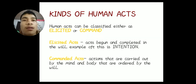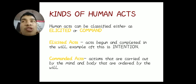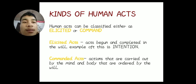There are two kinds of human acts: the elicited act and the commanded act. The elicited act is the act that becomes completely internal — a real example of this is intention. The commanded act is the action required by both mind and body, ordered by the will.